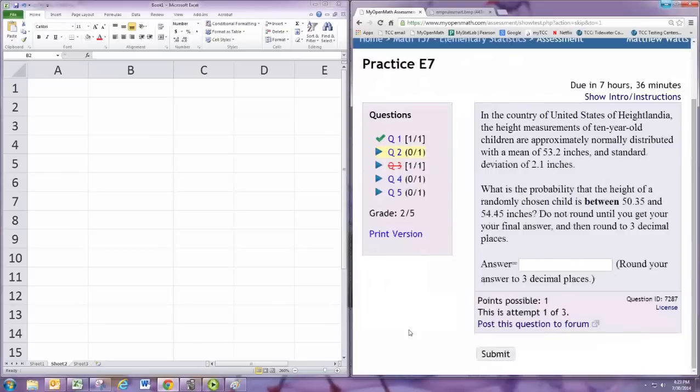In this video, we'll see how to do practice problem 2 from experience 7. In the country of United States of Heightlandia, the height measurements of 10-year-old children are approximately normally distributed with a mean of 53.2 inches and a standard deviation of 2.1 inches.